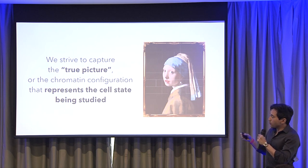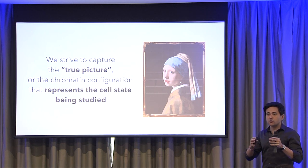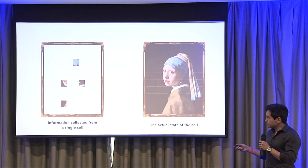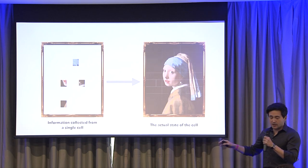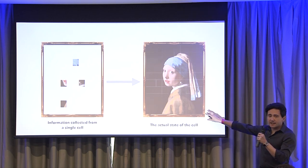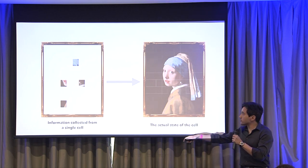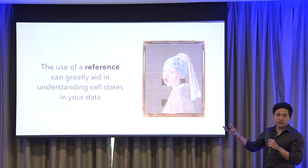In my field, we try to capture the true picture — the chromatin configuration that represents the true cell state we're looking at, whether that be an activated fibroblast or an exhausted T cell. The key point is that if you had the complete picture beforehand — a reference — even if a cell doesn't have that much information, just overlaying it using that reference enables us to identify what that cell type was.